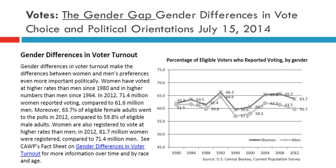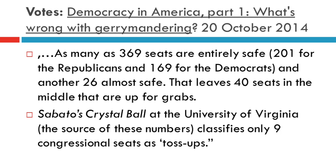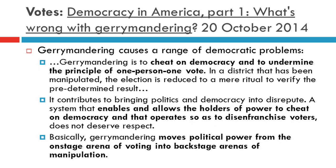Examining turnout, it is descriptively the case that women turn out at a slightly higher rate than men — in 2012, women's turnout was just under 64% and men's just under 60%. But does this translate into political power? One reason it does not is gerrymandering. In 2014, as many as 369 seats were entirely safe and another group were almost safe, leaving only 40 seats out of 435 that were up for grabs. Larry Sabato at the University of Virginia classified only nine congressional seats as toss-ups.